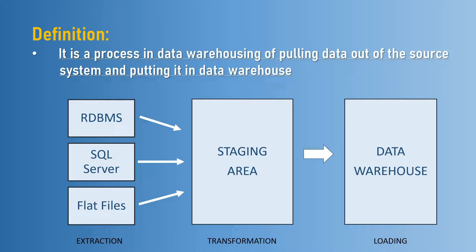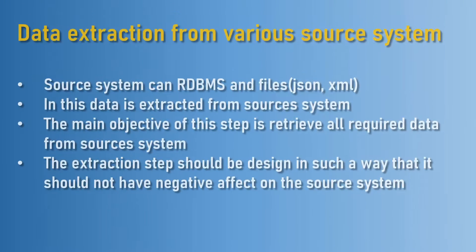That combined data store is loaded into a data warehouse. For example, as you can see here, we have RDBMS, SQL Server, and flat files — these are all data sources. In some cases the data is in RDBMS, in some cases SQL Server, and in some cases different files, and from those we extract the data. The process of performing operations on multiple data sources, making data into a single format, and storing it in a data warehouse is called the staging area. This whole process is known as ETL.